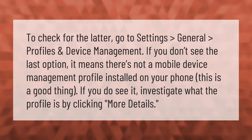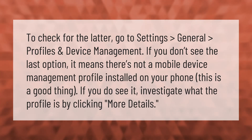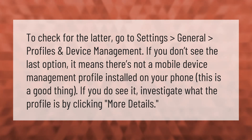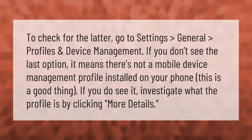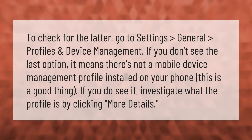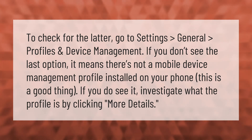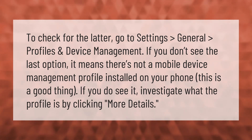To check for MDM on iOS, go to Settings, then General, then Profiles and Device Management. If you don't see that last option, it means there is no mobile device management profile installed on your phone — this is a good thing. If you do see it, investigate what the profile is by clicking More Details.